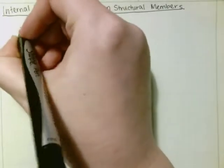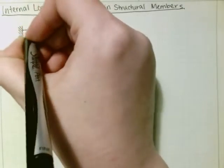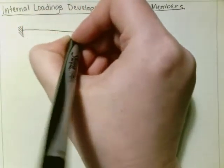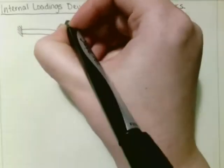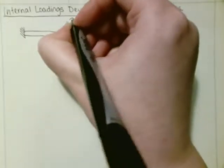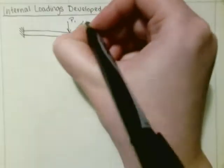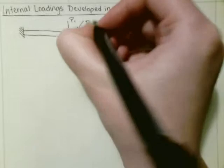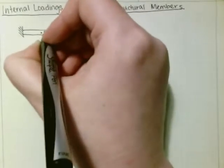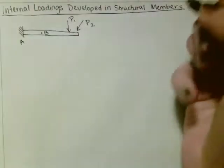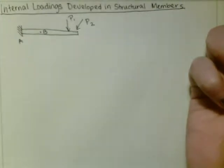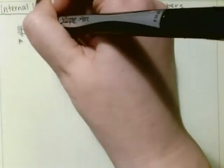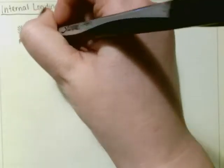Say we had a beam and we've got P1 and P2 at point B and point A. If we wanted to know the internal loadings at point B, we would section the beam right here — section AA.